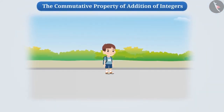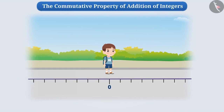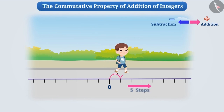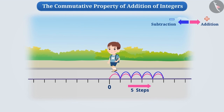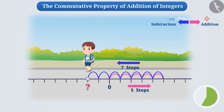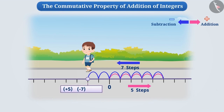Vipul is going somewhere. Let's express his current location by zero. We will represent the forward direction with the positive sign and the backward direction with the negative sign. Suppose Vipul walks five steps forward and then takes seven steps backwards — what will be his position? To find his exact location, we have to add plus five and minus seven, which gives us the result minus two.